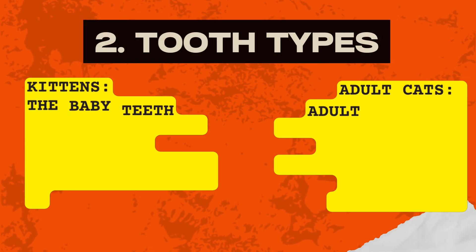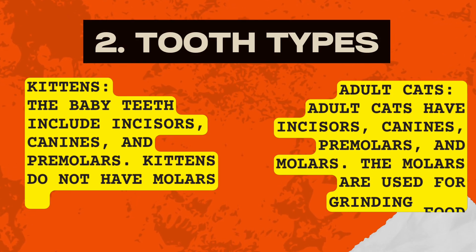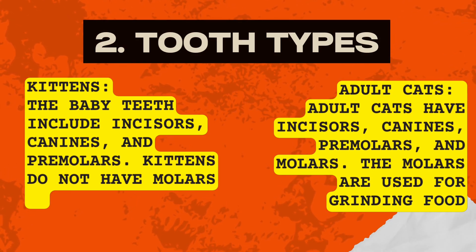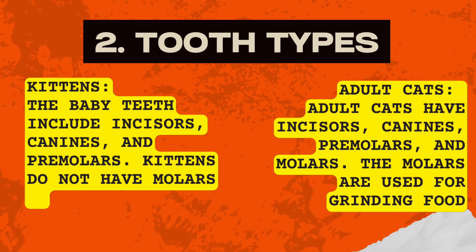Second, tooth types: kittens' baby teeth include incisors, canines, and premolars — kittens do not have molars. Adult cats have incisors, canines, premolars, and molars, with the molars used for grinding food.